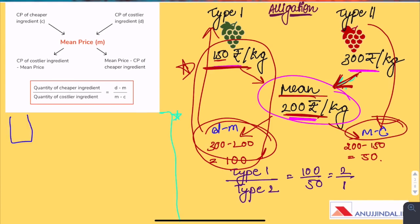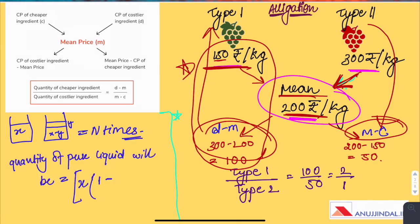One more important formula: suppose a container contains X liters of a liquid, from which Y units are taken out and replaced by water, and this process is repeated N times. After N operations, the quantity of pure liquid will be X × (1 − Y/X)^N units, where X is the initial quantity and Y is the amount of liquid removed and replaced each time. Remember this formula.